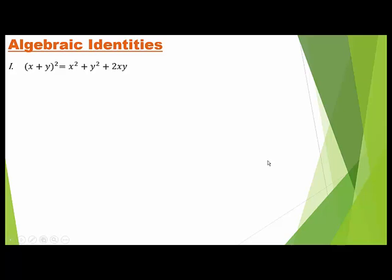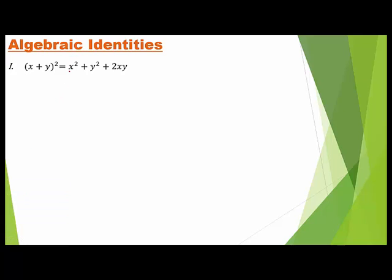Now let's start Exercise 2.5. Today we will discuss the algebraic identities involved in Exercise 2.5, and tomorrow we will discuss the numericals. Our first identity is: (x + y)² equals x² plus y² plus 2xy.